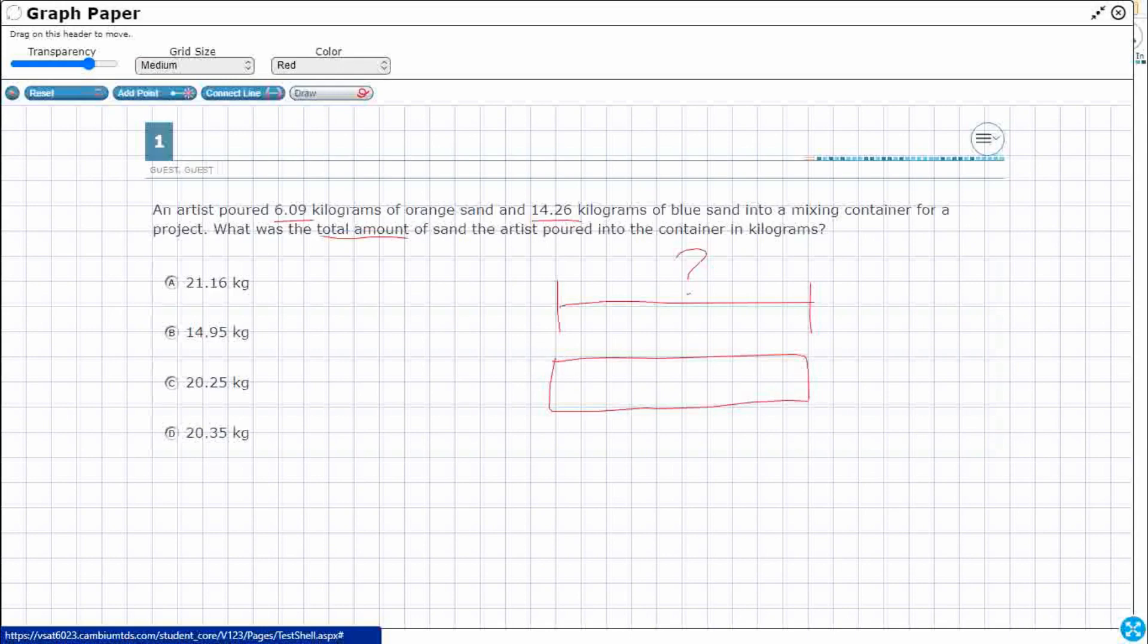And they're not really proportional, so I'll try to draw them disproportional. So we've got the 6.09, and then we've got the 14.26.